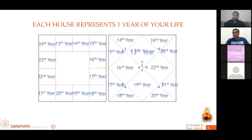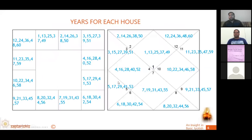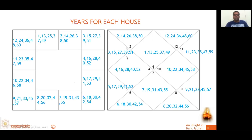From the 13th year, the first house gets activated and again a cycle of 12 years runs. With every year, subsequent houses get activated. So the first house activates in years 1, 13, 25, 37, 49. Add one to each and you get the activation years for the second house, and so on. Eventually, you go around and have a cycle of 60 years as shown in this chart. At the 61st year, the first house activates again.